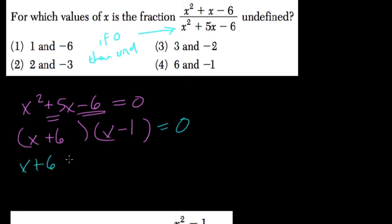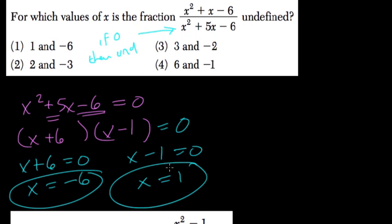So x plus 6 could equal 0, and x minus 1 could equal 0. We solve for x, and those are the values that you're looking for: negative 6 and 1, choice 1.